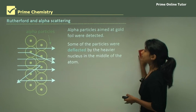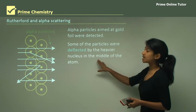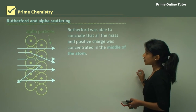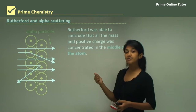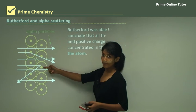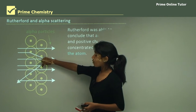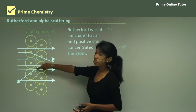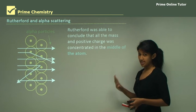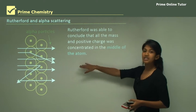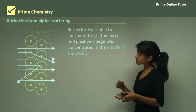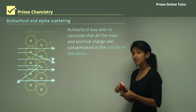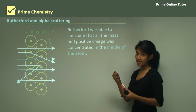Rutherford proposed that some of the particles were deflected by the heavier nucleus in the middle of the atom. He was able to conclude that all mass and positive charge were concentrated in the center of the atom. In other words, he said all the protons and neutrons were in the little nucleus while the electrons orbited it, though he wasn't very sure about the electrons yet. With Rutherford, he used alpha scattering and concluded that all mass and positive charge were concentrated in the center of the atom.